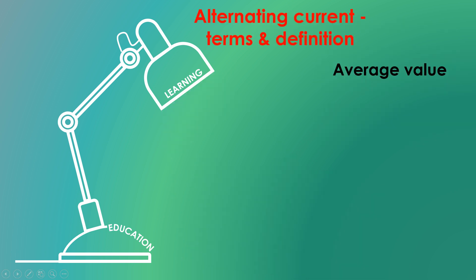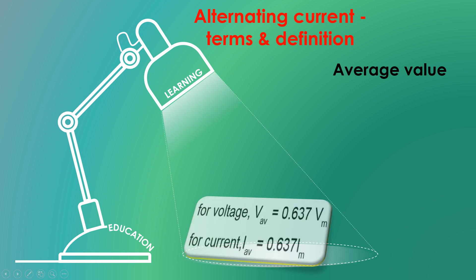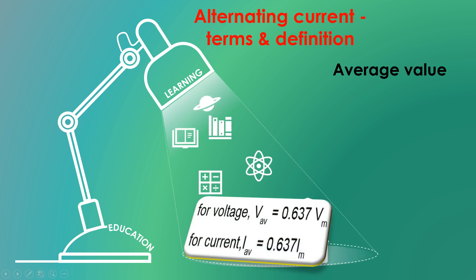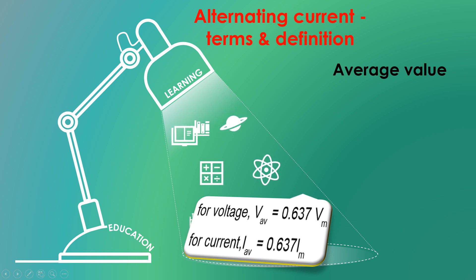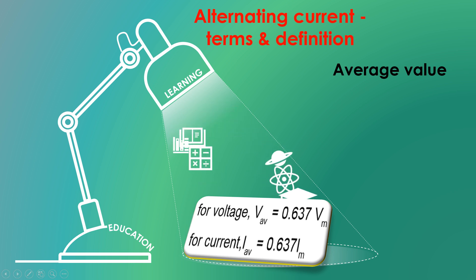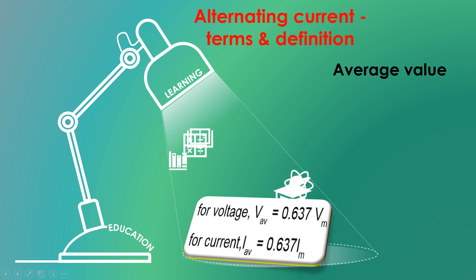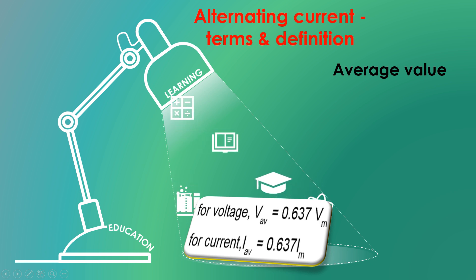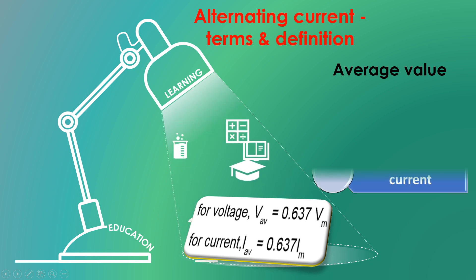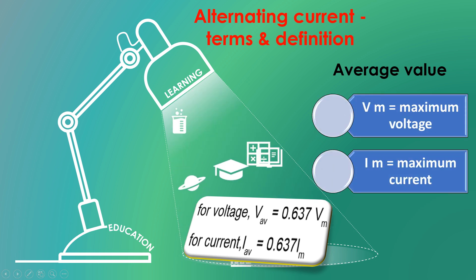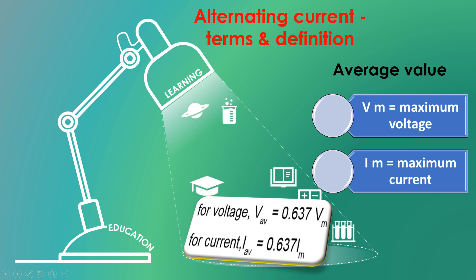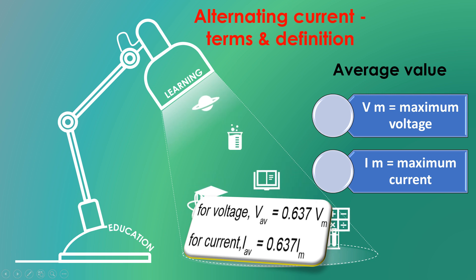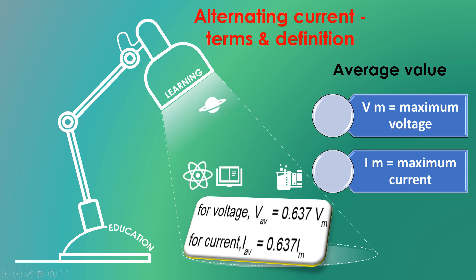The formula to find average value: Average voltage equals to 0.637 Vm, average current equals to 0.637 Im, where Vm means maximum voltage, Im means maximum current.